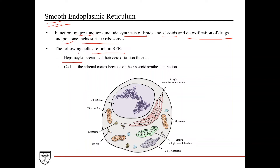Hepatocytes, which are liver cells, have high concentrations of smooth ER because one of their main functions is to detoxify drugs and poisons that are ingested into the body. Cells of the adrenal cortex — an organ located above the kidney and responsible for synthesizing steroid hormones — also have a high concentration of smooth endoplasmic reticulum because smooth ER is responsible for synthesizing steroids.